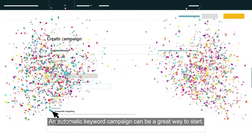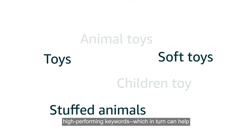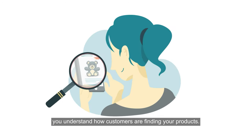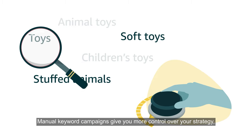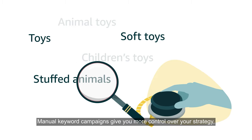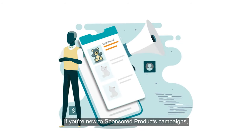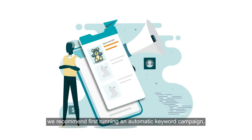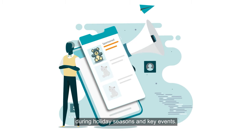An automatic keyword campaign can be a great way to start — it's fast, easy, and can help you quickly identify relevant, high-performing keywords, which in turn can help you understand how customers are finding your products. Manual keyword campaigns give you more control over your strategy, allowing you to focus more heavily on high-performing keywords. If you're new to sponsored products campaigns, we recommend first running an automatic keyword campaign rather than a manual one during holiday seasons and key events.